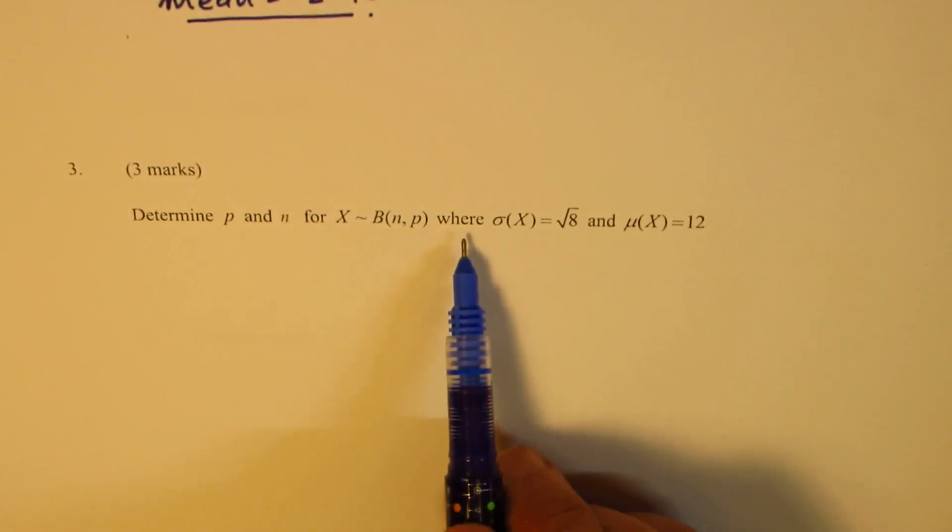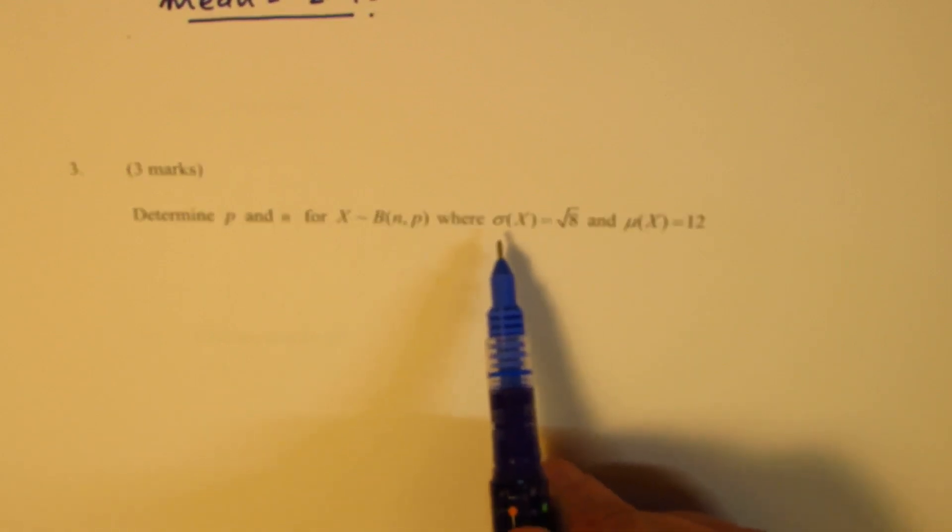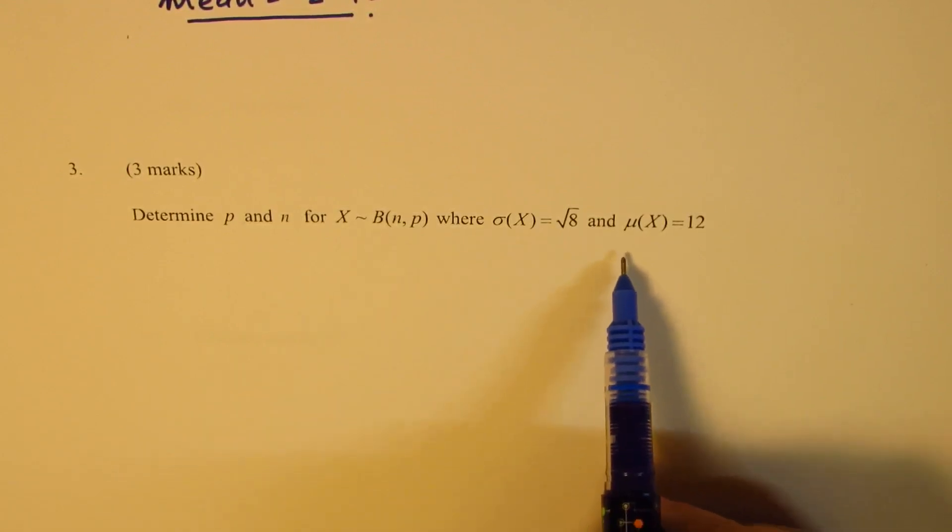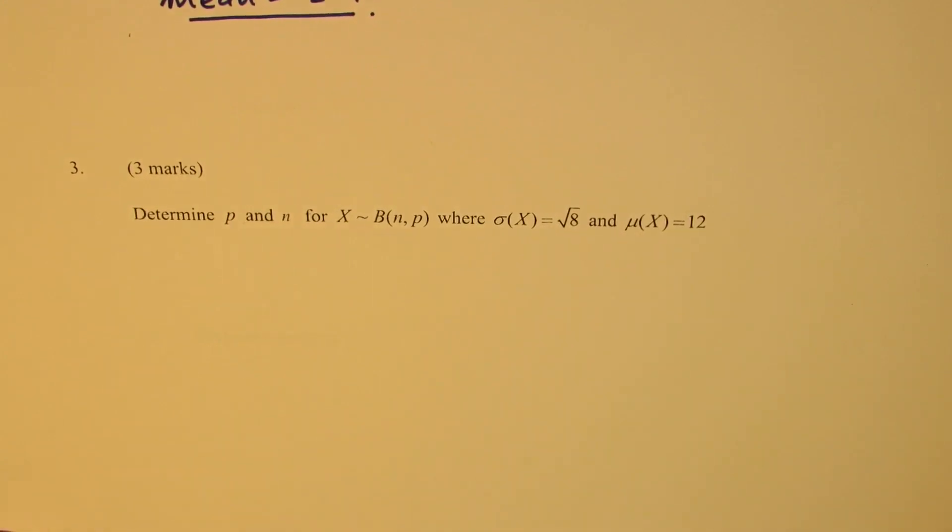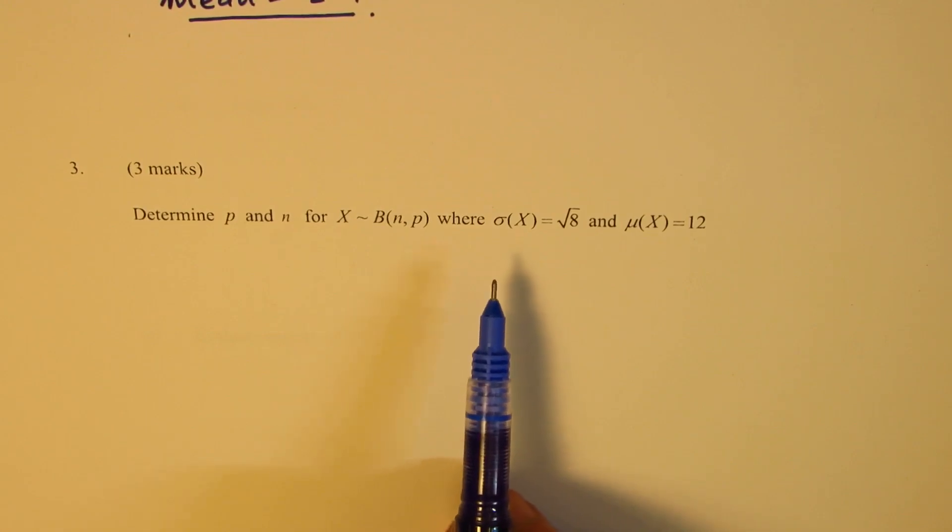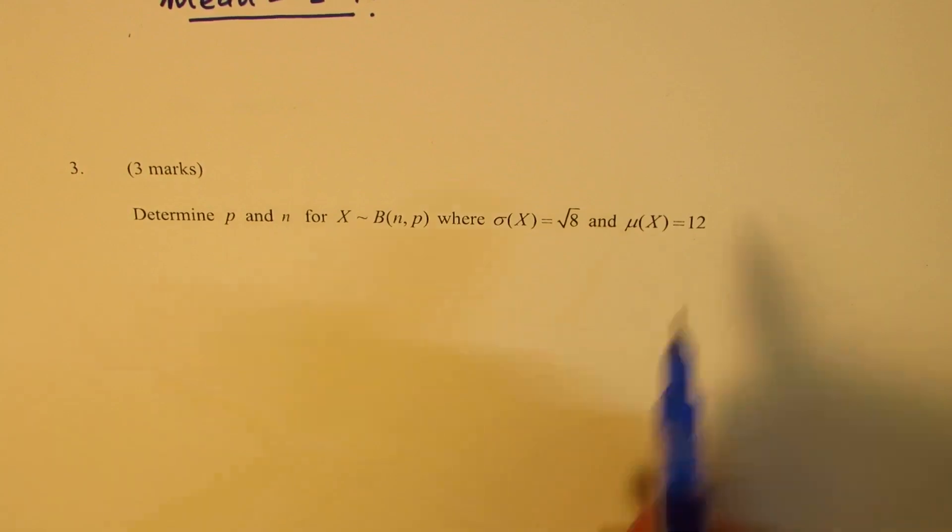Where sigma X is equal to square root of 8, that's the standard deviation, and the mean is given to us as 12. Now for binomial distribution, the formula for mean is... let's write down the formula so that we can easily solve this particular question.